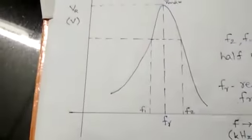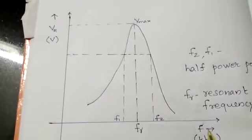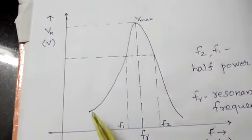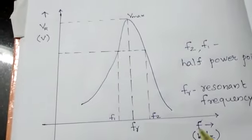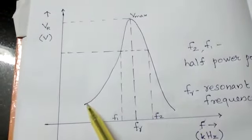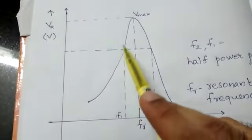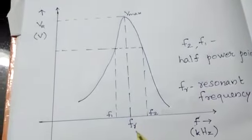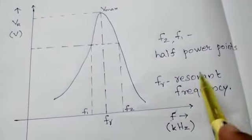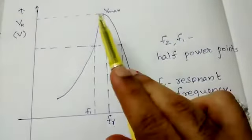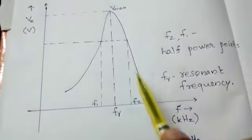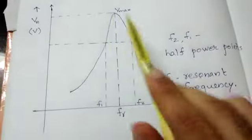If we graphically plot the input frequency F along the x-axis and the voltage across the resistance Vr along the y-axis, you get a graph where for low values of input frequency F, the voltage is low. When we increase the input frequency, the voltage increases and reaches a maximum Vmax at a particular value of F called FR, the resonance frequency. If F is increased further beyond FR, the output voltage decreases again.